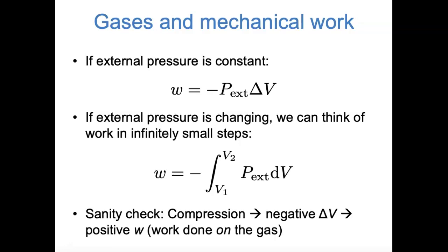Just as a sanity check with our sign convention: notice that if the gas is compressed, ΔV is negative—volume is getting smaller. So we have a negative sign out front multiplied by a negative sign in ΔV, which means that the amount of work done in compression is positive, which we said is our sign convention.